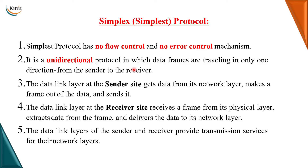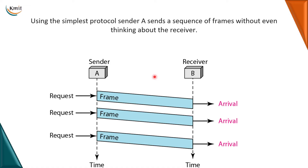In the Simplest Protocol, data is unidirectional — sent in only one direction, traveling from sender to receiver. The data link layer gets data from the network layer, makes a frame, and sends it to the physical layer. On the receiver side, the physical layer bits are taken by the data link layer, transformed back into a frame, and transmitted to the network layer as a packet. Frames are all received safe and sound.